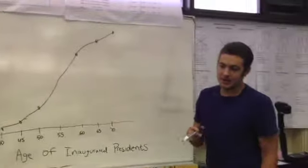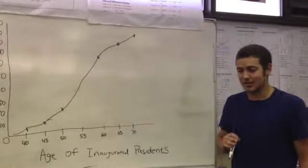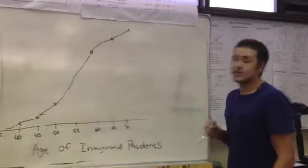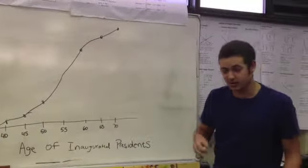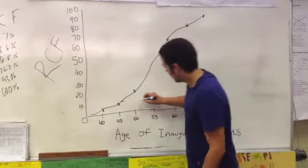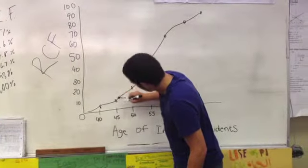Now the question we are asking you is, was Bill Clinton a young president? The question is how old was Bill Clinton when he was first inaugurated? Well that answer is 46, which would place Bill Clinton right about here.